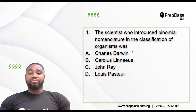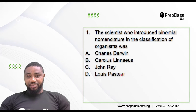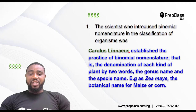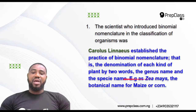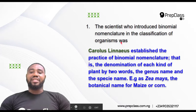I believe Charles Darwin played a role in evolution. John Ray — I don't really know much about this person. Louis Pasteur was a scientist that wrote about how to pasteurize milk, that is, to prepare milk in a very hygienic and sanitary condition. Carlos Linnaeus established the practice of binomial nomenclature, that is, the denomination of each kind of plant by two words — the genus name and the species name. So the scientist that introduced binomial nomenclature was Carlos Linnaeus.